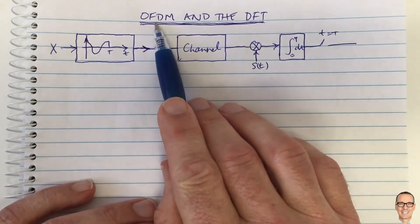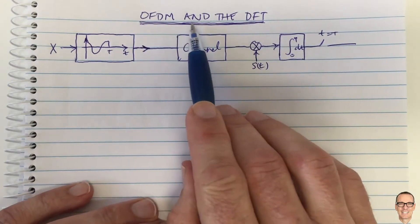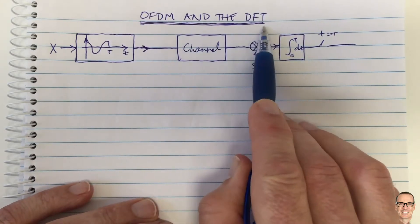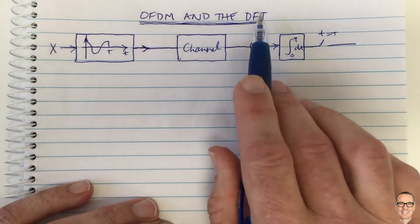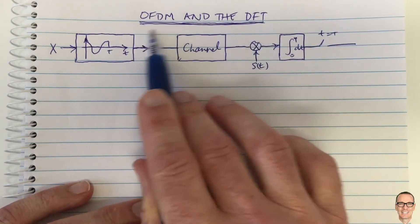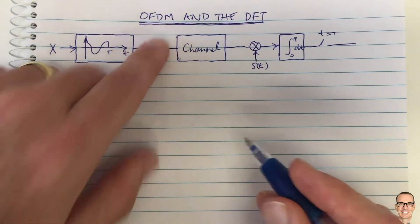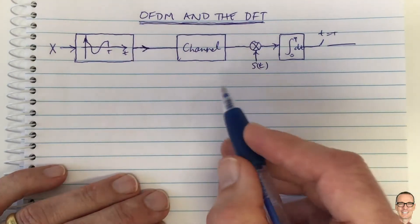Let's look at orthogonal frequency division multiplexing and see how it relates to the discrete Fourier transform. We'll understand the power of the DFT to deliver this new modulation scheme that's in all of our mobile phones: OFDM.